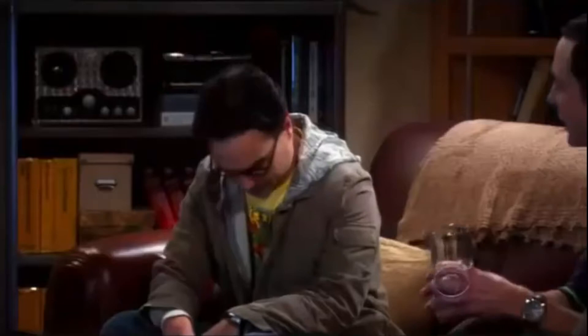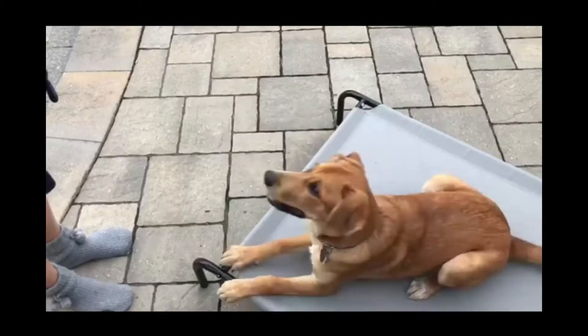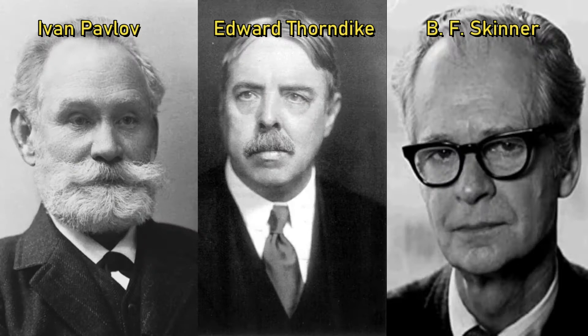Operant conditioning techniques build on the works of Thorndyke and B.F. Skinner. Classical conditioning forms an association between two stimuli, while operant conditioning forms an association between a behavior and a consequence.